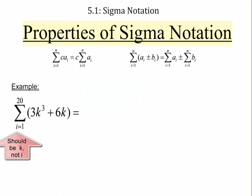So say you're supposed to add up i goes from 1 to 20 of 3k cubed plus 6k. Using these rules we just talked about, what's the first thing you should do? Separate it over the addition. So that would be i goes from 1 to 20 of 3k cubed plus a new sum, i goes from 1 to 20 of 6k.